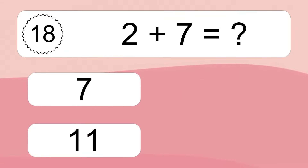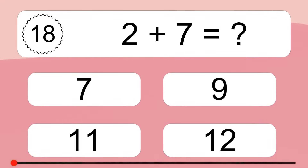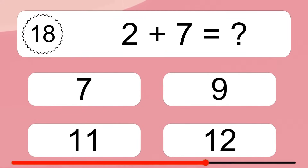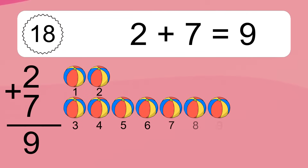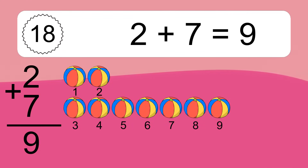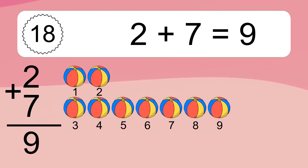2 plus 7 equals what? 2 plus 7 equals 9. Let's count it: 1, 2, 3, 4, 5, 6, 7, 8, 9.